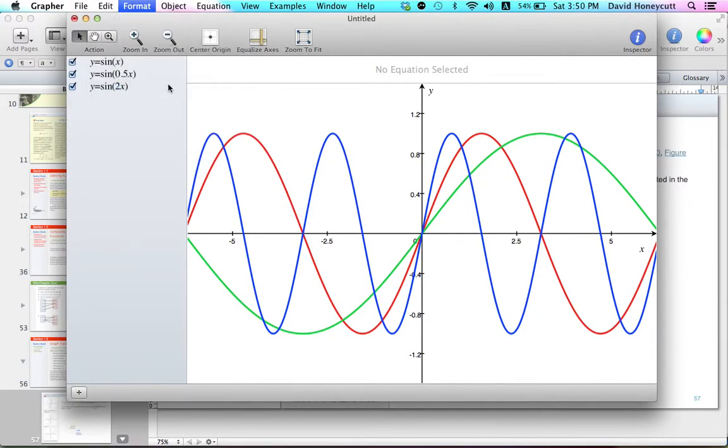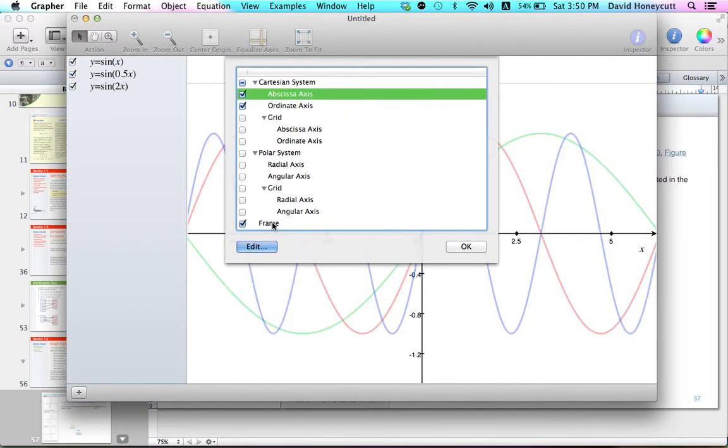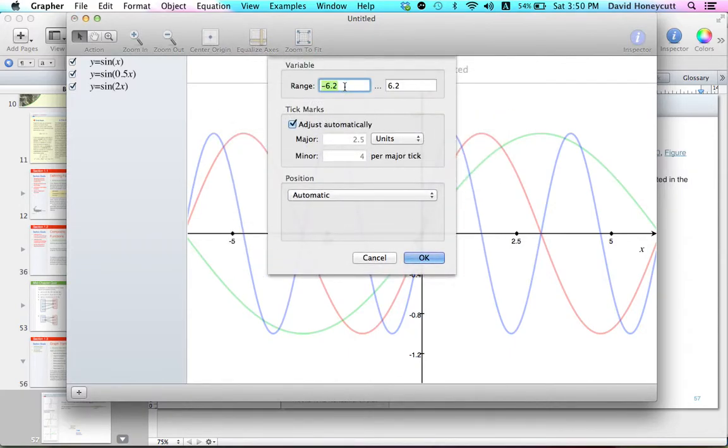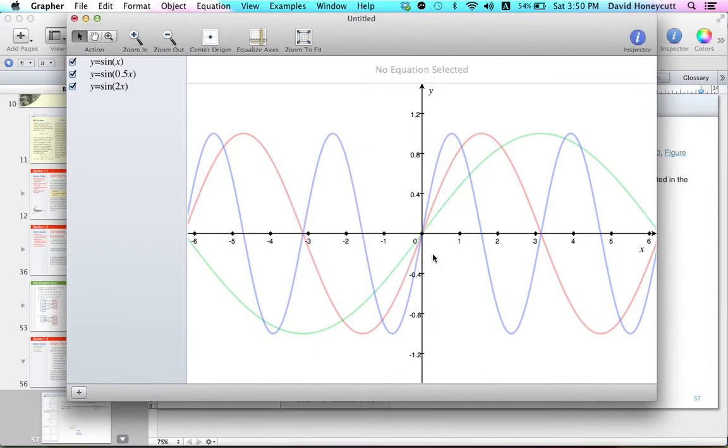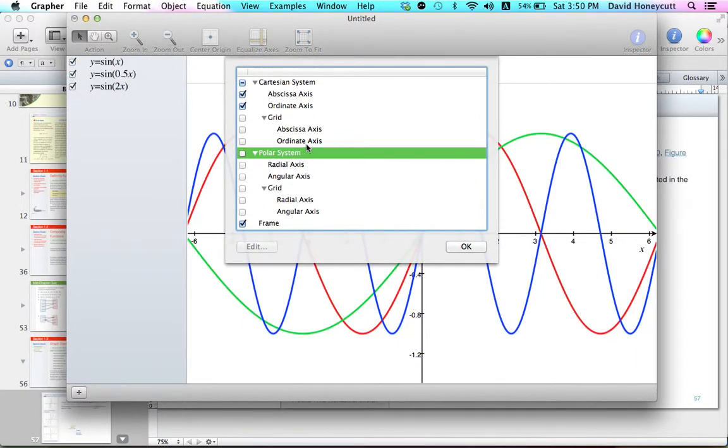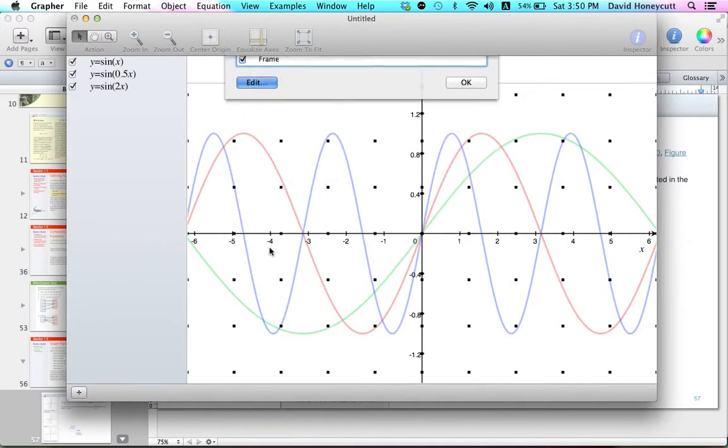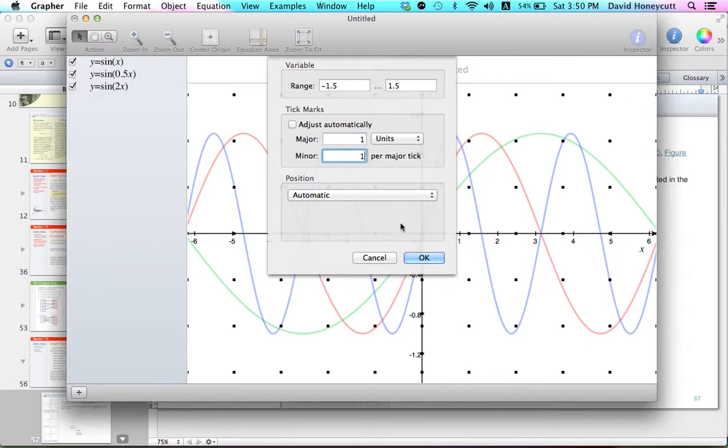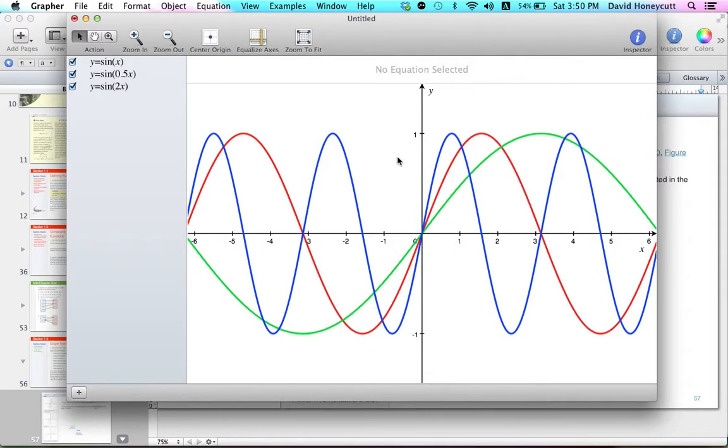I believe it's here. Select abscissa axis, that would be the x axis. Uncheck adjust automatically for your tick marks, you want one and one. That'll have it to where it's one every time and it'll show you one. Then do the same thing again, axis and grids, for the ordinate axis, uncheck, one, one. There, now you have a nice axis.